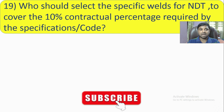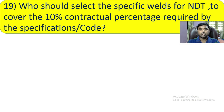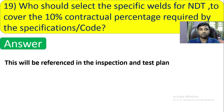Question number 19: Who should select the specific welds for NDT to cover the 10% contractual percentage required by the specification? This will be referenced in the inspection and test plan. It is agreed between the contractor and the client and documented in the contract document. The reference is the inspection and test plan.